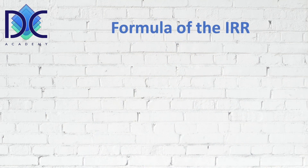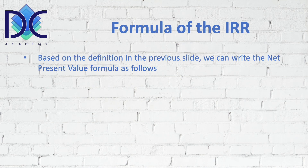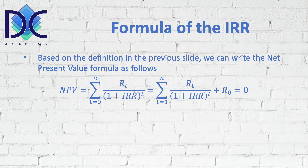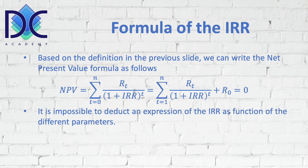When we look at the formula, the net present value formula requires an interest rate as input, but we cannot find a direct algebraic expression that gives us the interest rate as a function of the initial investment and cash flows. For the IRR, we use the net present value formula set equal to zero and replace the interest rate with the IRR. We have the summation of discounted cash flows, where the discounting parameter is one plus the internal rate of return, plus the initial investment.